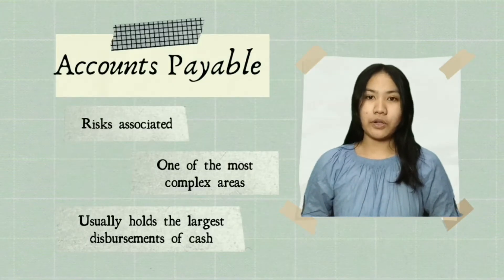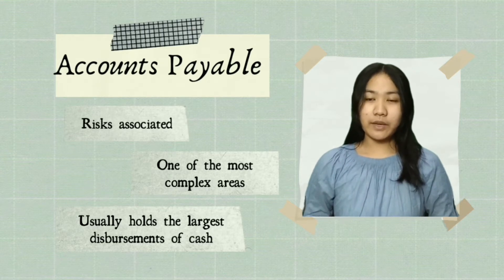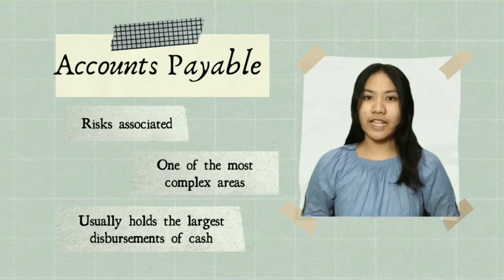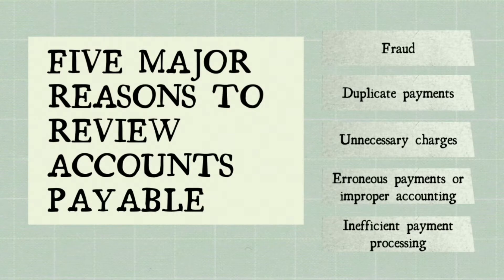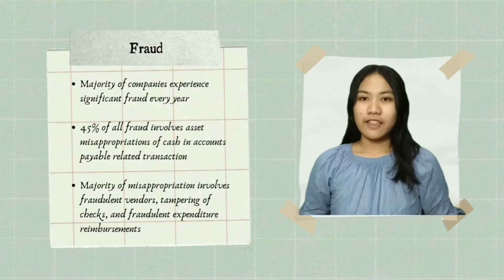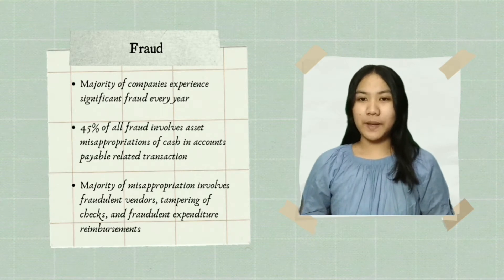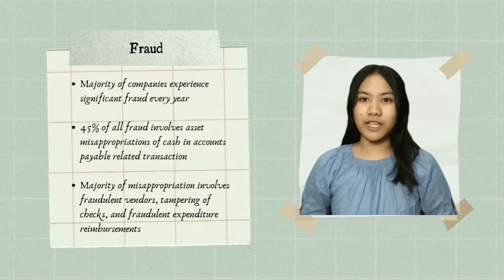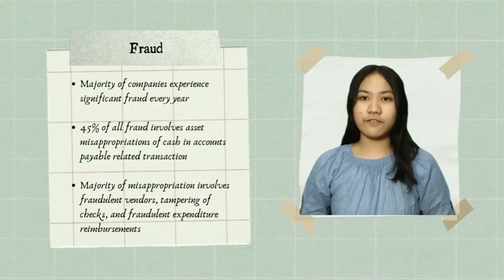It is important to audit accounts payable because of the risks associated with it. Accounts payable is one of the most complex areas due to numerous purchasing agreements with different vendors. Accounts payable usually holds the largest disbursement of cash in the organization, making it vulnerable to misappropriation due to its liquidity. Here are five reasons why we should audit accounts payable. The first is fraud — roughly 45% of all fraud involves asset misappropriations of cash in accounts payable-related transactions, with an additional 13% related to bribery or corruption. Most misappropriations involve fraudulent vendors, tampering of checks, and fraudulent expenditure reimbursements.